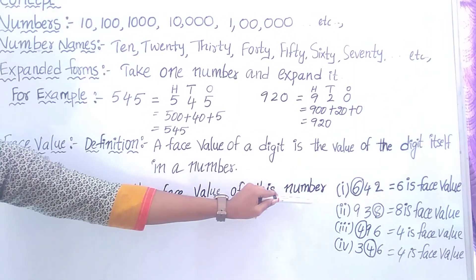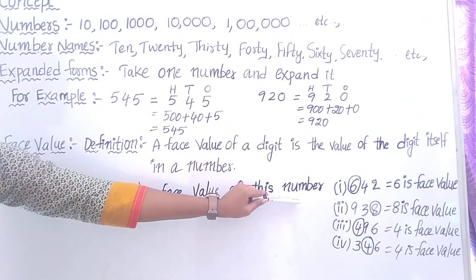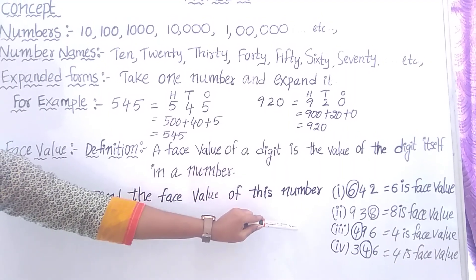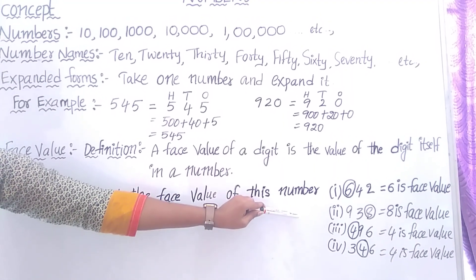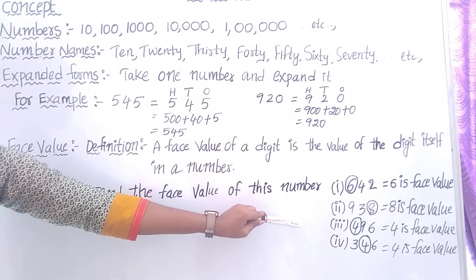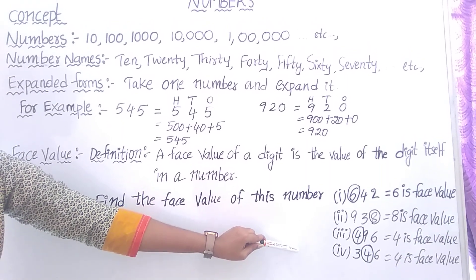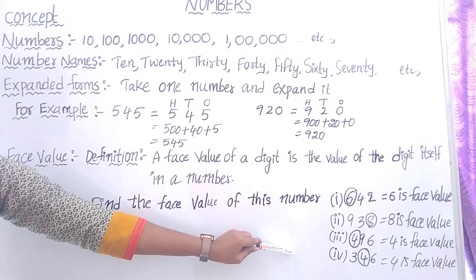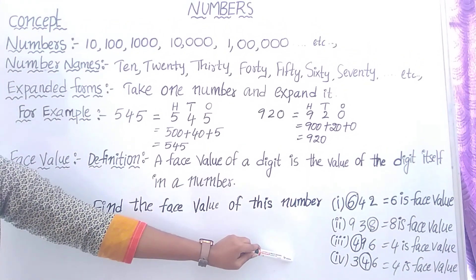Here 8 is circled, so 8 is the face value of this number. Here 4 is circled, so 4 is the face value of this number. Here in 3, 4 — 4 is circled, so 4 is the face value of this number.